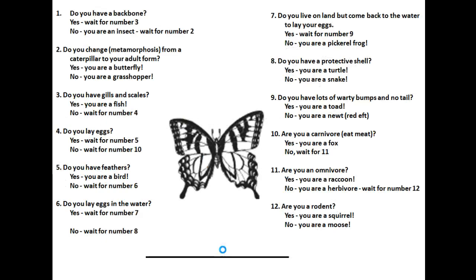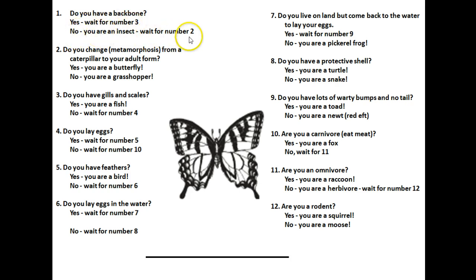So this is a dichotomous key. You take one picture at a time for one type of animal you're wanting to identify. For instance, let's pretend we didn't know what this was. We're going to start with question number one. Dichotomous — 'di' means two — so dichotomous means two choices. For question number one you have two choices: does this animal have a backbone? If yes, go to number three. If no, you're an insect. This one does not have a backbone, so we go to number two: do you have metamorphosis from a caterpillar to an adult form? If yes, then you're a butterfly — and it is yes. We would write butterfly on the line, and now we're done with that animal.